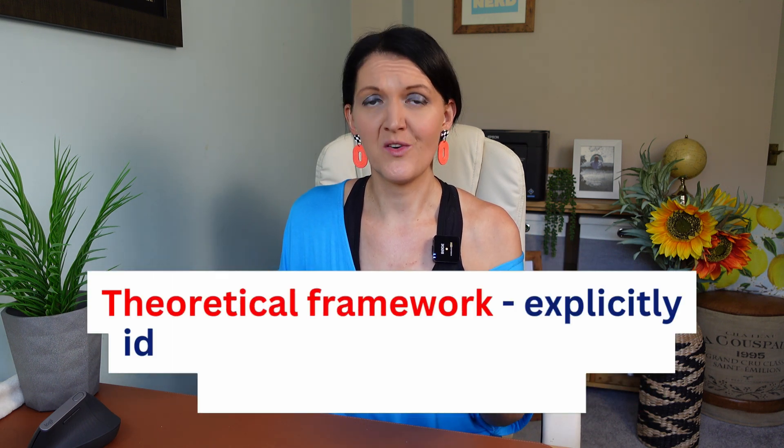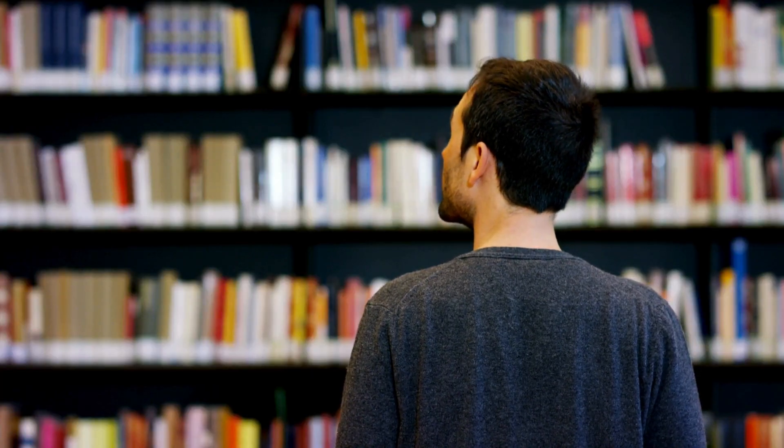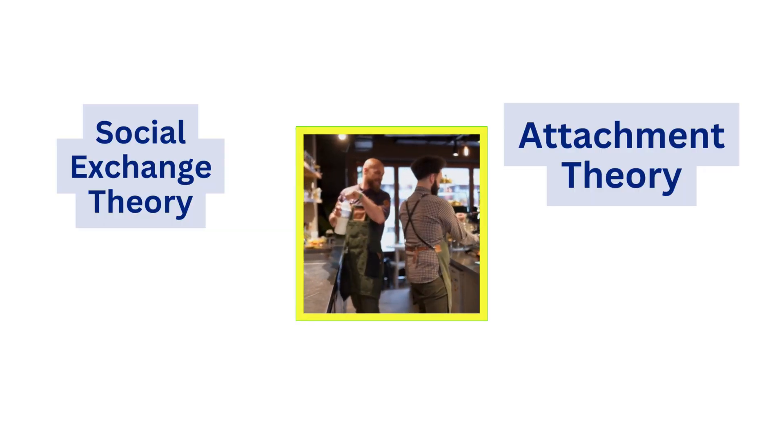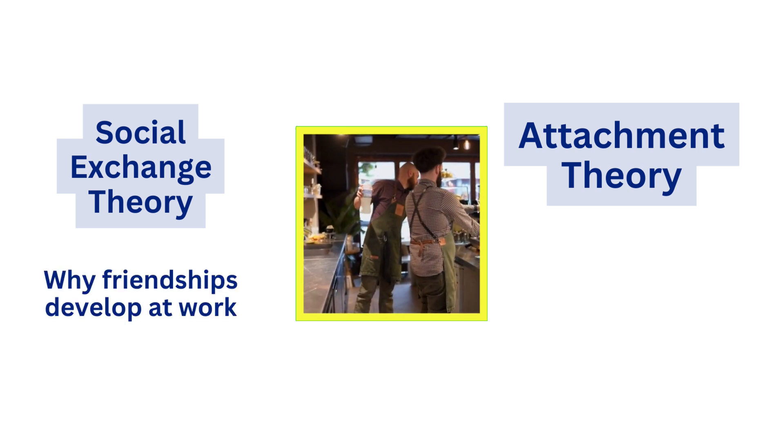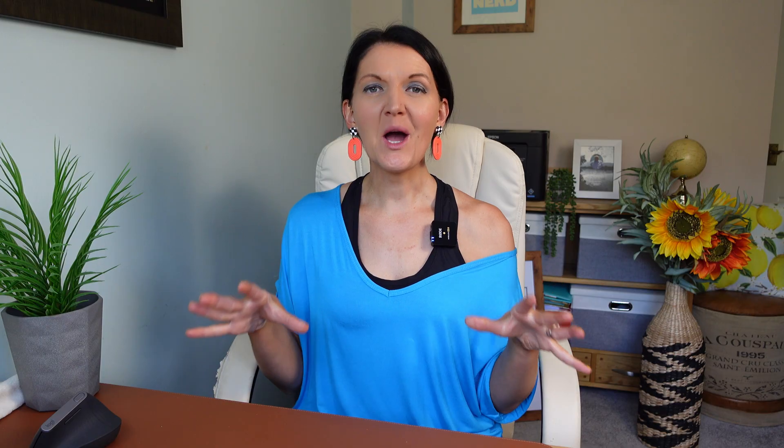Next up: theoretical framework. A theoretical framework is closely linked to a conceptual framework but is more specifically focused on the theories that underpin your research. Whilst a conceptual framework might include a broad range of concepts and variables, a theoretical framework explicitly identifies particular theories to guide your research. Theoretical frameworks help you position your research within the broader academic literature and show how your study is grounded in existing knowledge. In our study, the theoretical framework might be grounded in social exchange theory and attachment theory — the former explaining why friendships develop, the latter focusing on the bonds between co-workers.